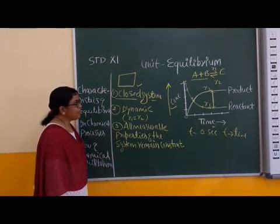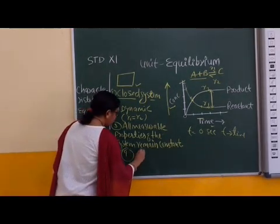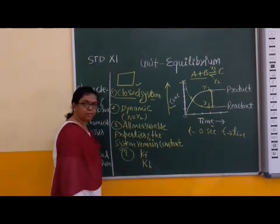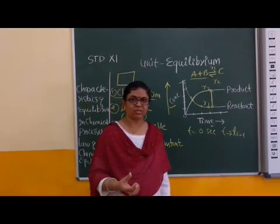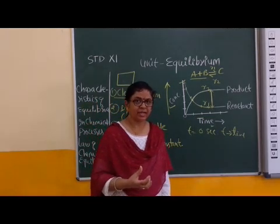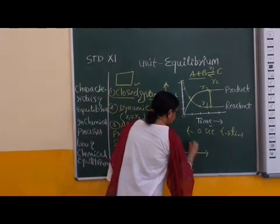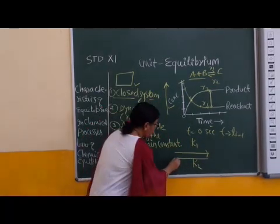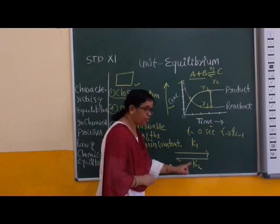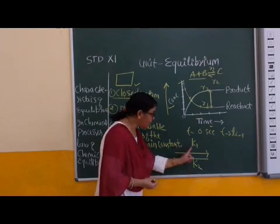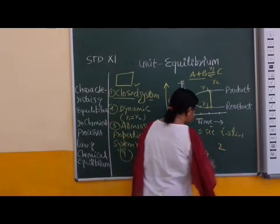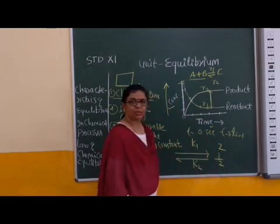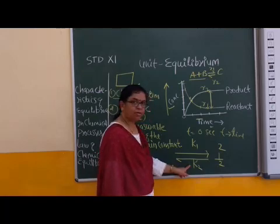Next is equilibrium constant. If the equilibrium constant in the forward direction is given as Kf, and in the backward direction as Kb, then this ratio is also constant, which is the equilibrium constant. If the equilibrium constant in the forward direction is K1, then the value in the reverse direction K2 is always the inverted form: K2 equals 1 over K1. For example, if the equilibrium constant in the forward direction is 2, then in the backward direction K2 equals 1 over K.